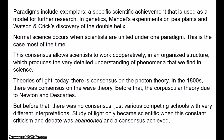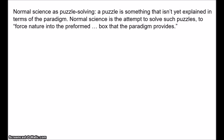That's an example of the importance of achieving a consensus. Now, Kuhn characterised normal science as puzzle solving. A puzzle is something that isn't yet explained in terms of the paradigm, and when doing normal science, scientists try to solve such puzzles — they try to interpret the world in terms of their paradigm. As Kuhn says, normal science is 'an attempt to force nature into the preformed and relatively inflexible box that the paradigm provides.'